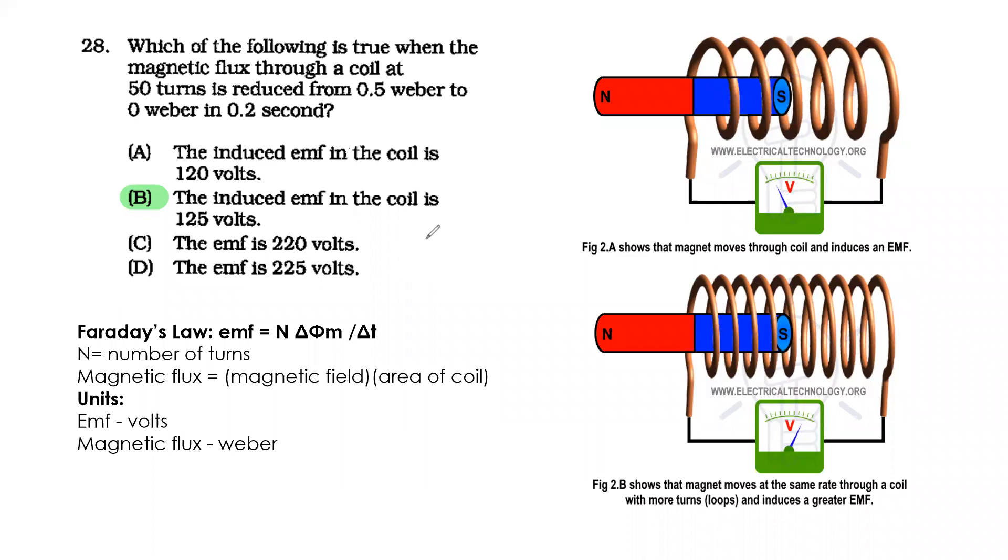EMF equals 50 turns times 0.5 divided by 0.2. If the change is from 0.5 to 0.2 weber, you should put 0.3 here. You don't have a calculator, but the answer is 125. That's the answer.